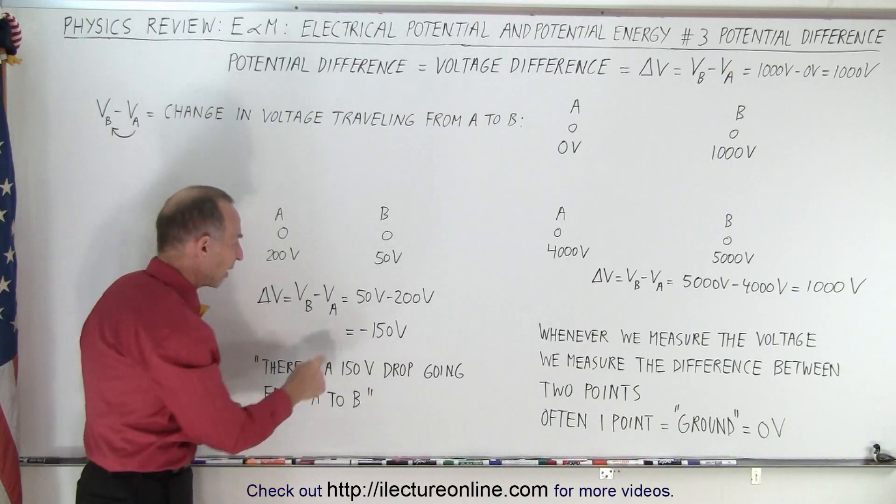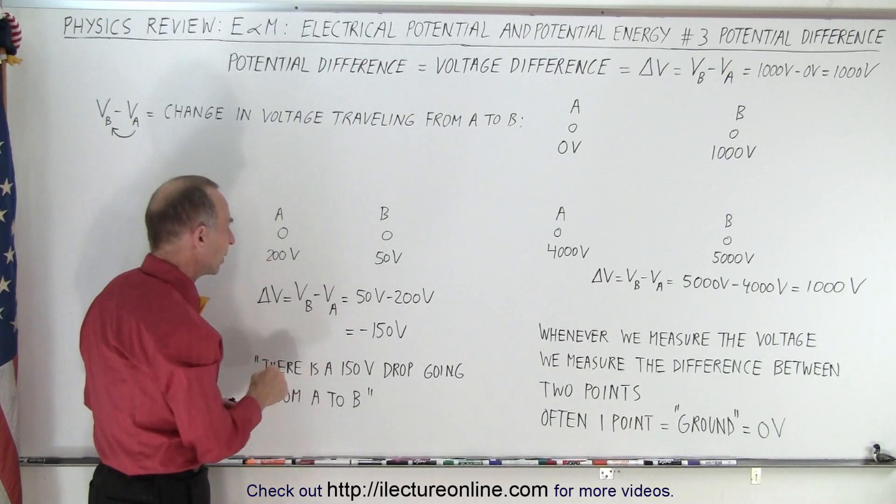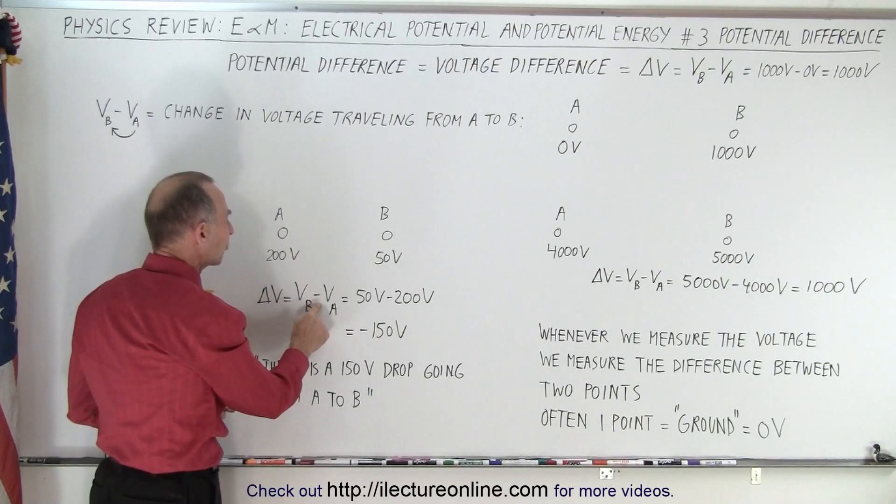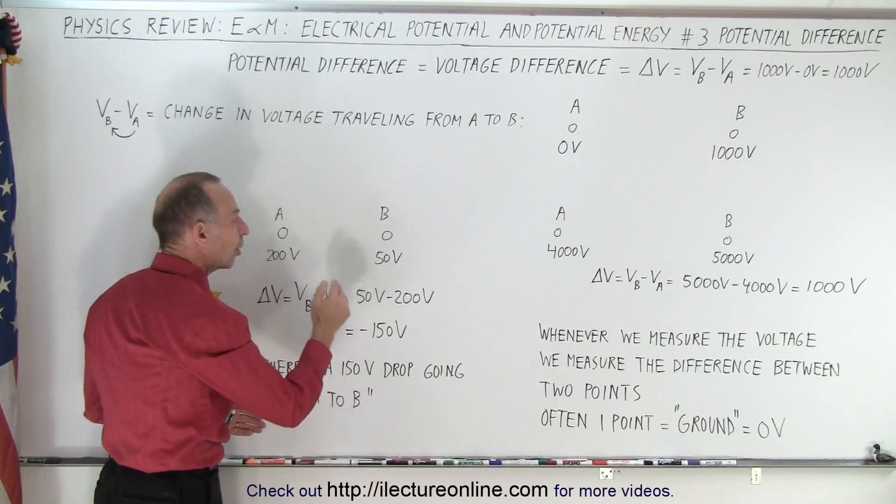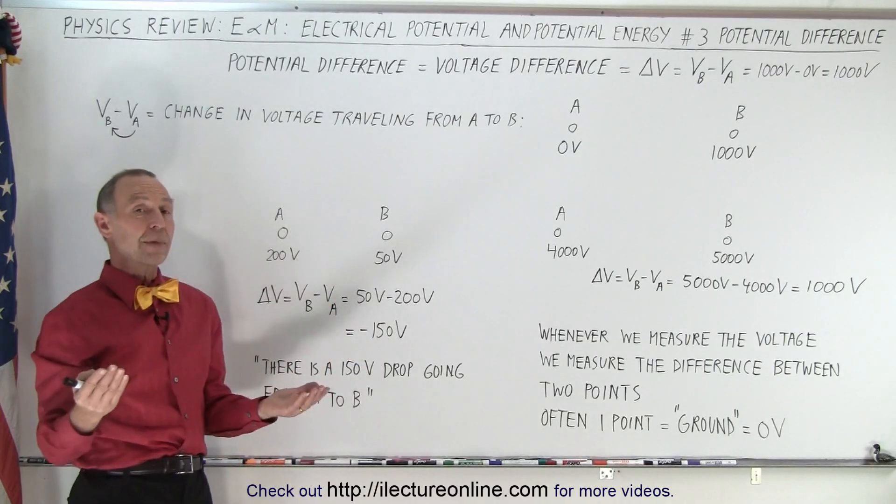How does the voltage change when we travel from A to B? So we take the voltage at B, subtract from that the voltage at A, so we get 50 volts minus 200 volts and we get minus 150 volts. What does that mean?